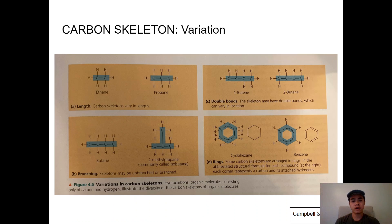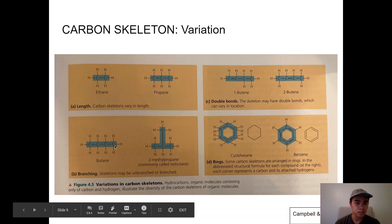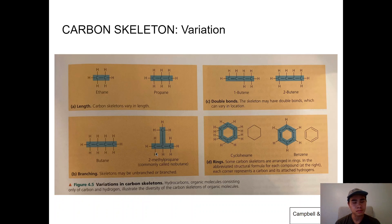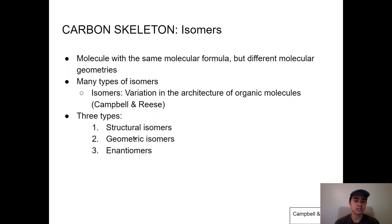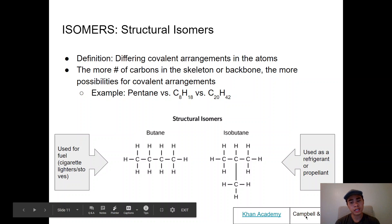When you shift carbons around, you can end up with the same molecular formula but a different structure. For example, both butane and isobutane have four carbons and ten hydrogens — C₄H₁₀ — but differ in structure. These are called isomers: molecules with the same molecular formula but different molecular geometries. Isomers vary in their architecture, and there are three main types: structural, geometric, and stereoisomers.